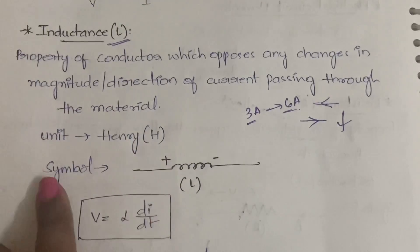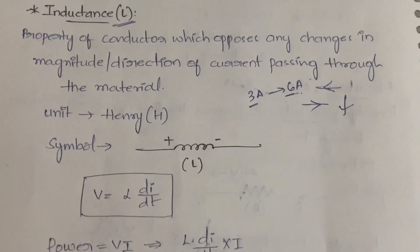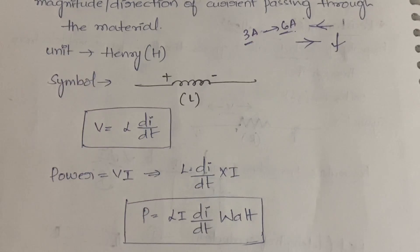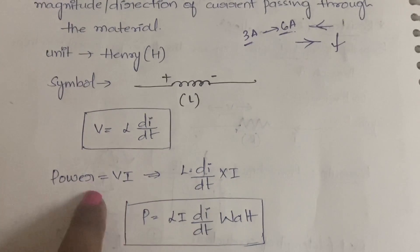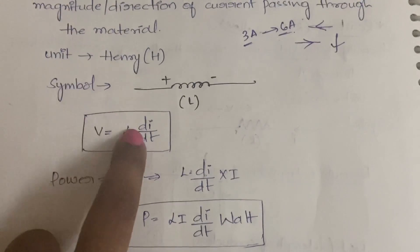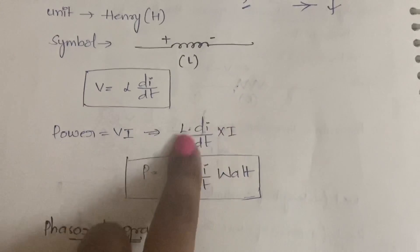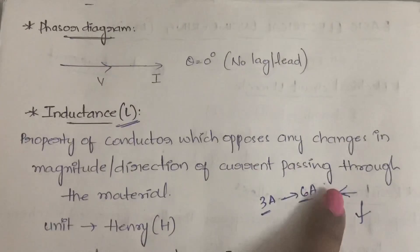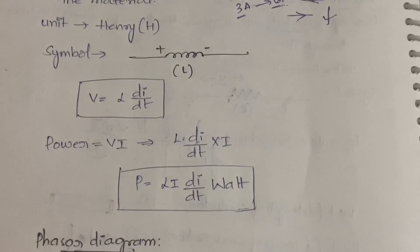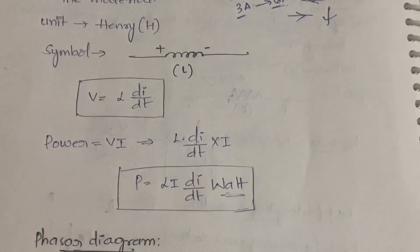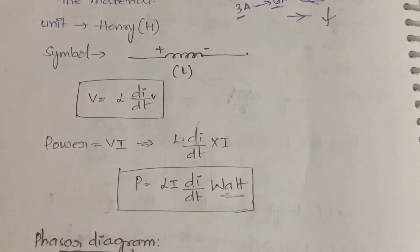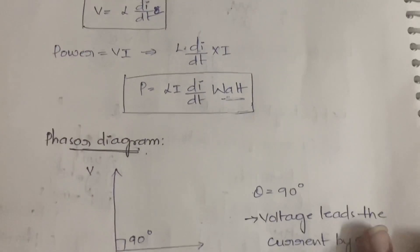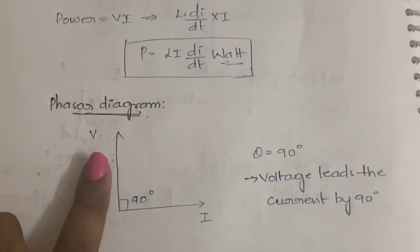The unit of inductance is henry, denoted by H, and the symbol is a coil. The formula is V equals L times dI/dt. For power: P equals V times I, and substituting V gives P equals L times I times dI/dt, where dI/dt represents the rate of change of current.